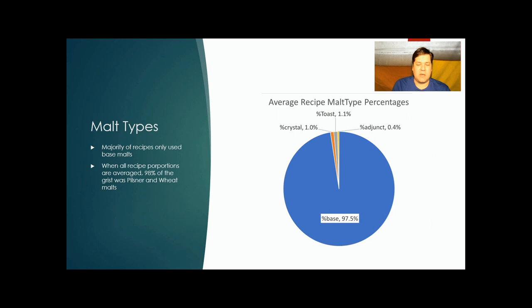The malt types: when you average all the types of malts used in all these 15 recipes, 97.5% were base malts. Had a little bit more variation than Hefeweizen. Only 1% crystal malts, 1.1% toast malts, and half a percent of adjuncts.